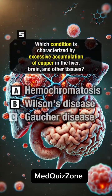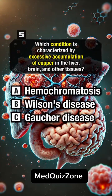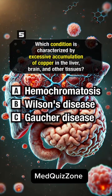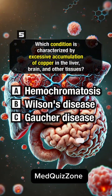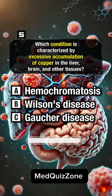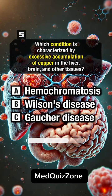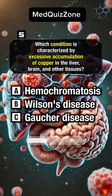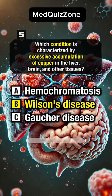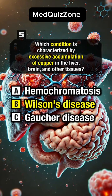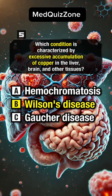Which condition is characterized by excessive accumulation of copper in the liver, brain, and other tissues? Answer B: Wilson's disease.